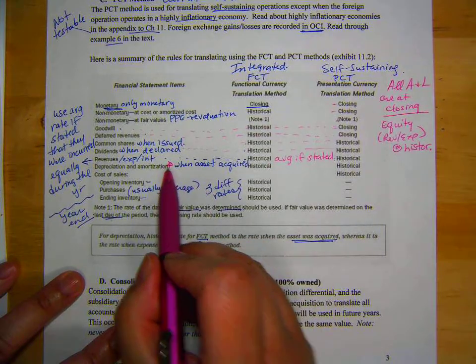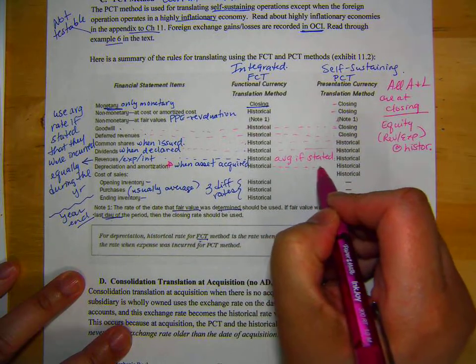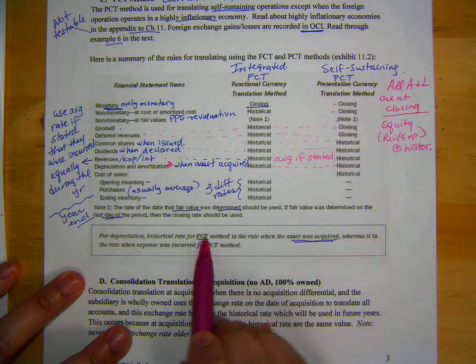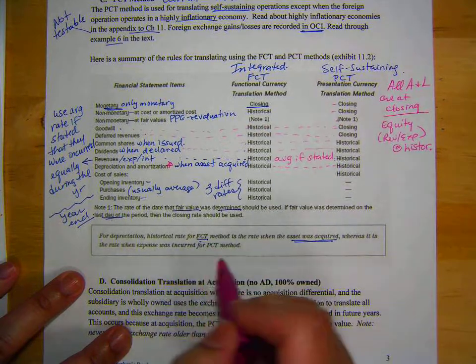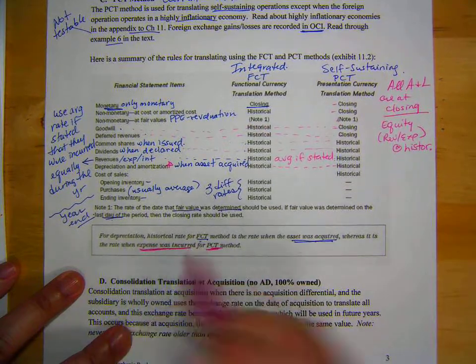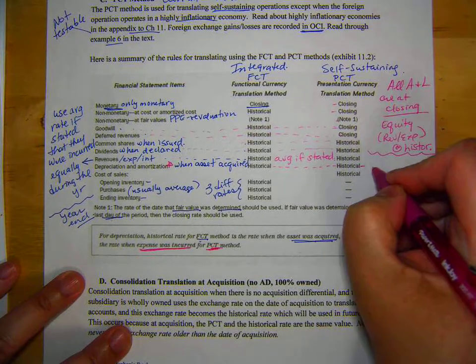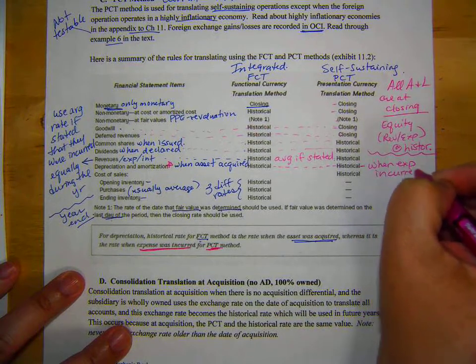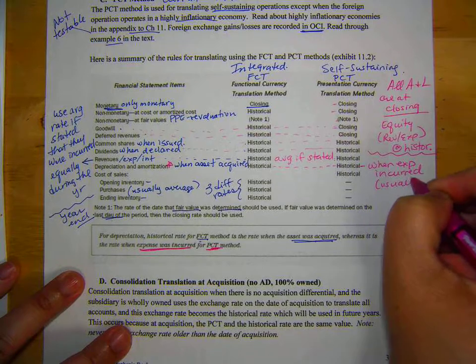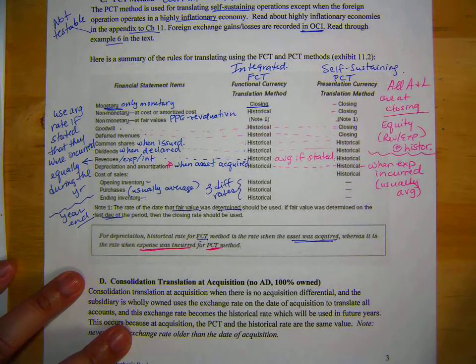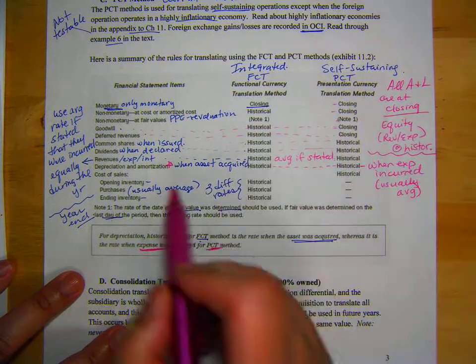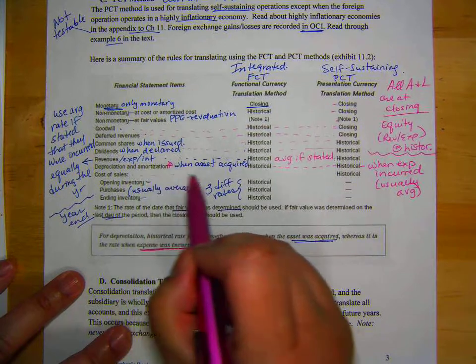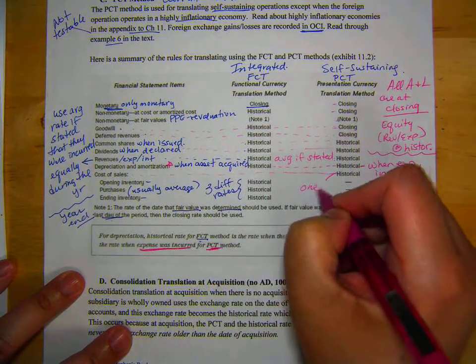Now, depreciation is different. So this is depreciation. If you look down here, FCT, the rate when the asset was acquired. But for PCT, the expense was incurred. So, when expense incurred, so it's usually average. Now, cost of sales is easy in PCT. It's all historic, just one rate.